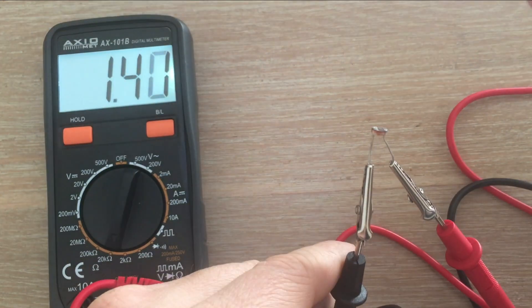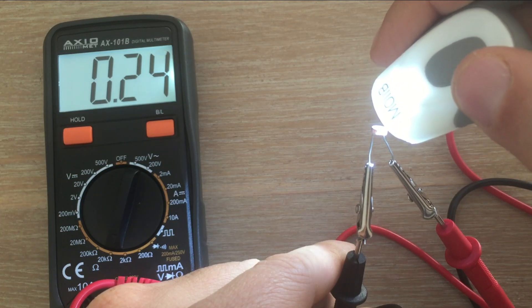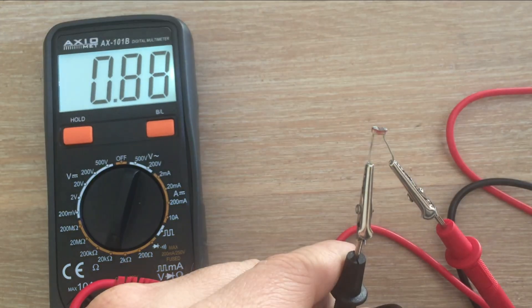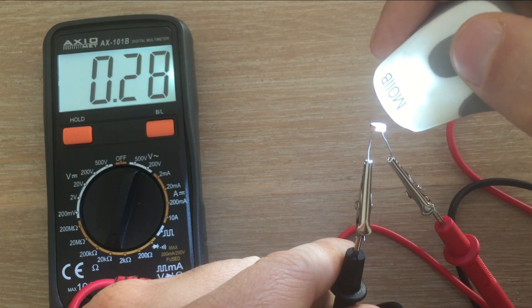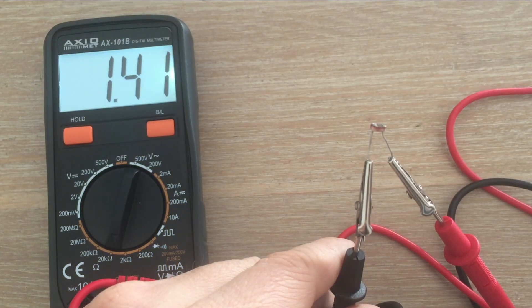When I illuminate the face of the photoresistor, the resistance falls all the way down to 200 Ohms. The big question is how to convert this change in resistance to Arduino input, so we can react to it.